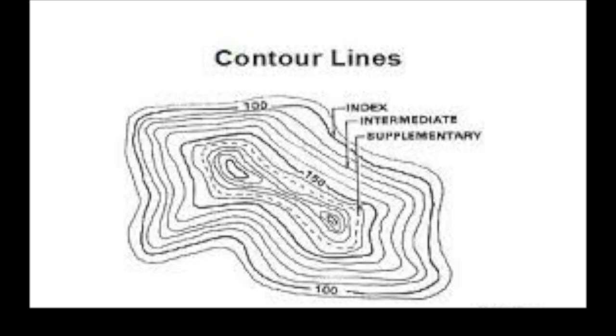Now there are three different kinds of contour lines. You have the index contour line which, as you see in this picture here, has the elevation marked on it. Then you have what is the most common, the intermediate contour lines, which are not labeled. And then you'll have the dotted supplementary lines. Supplementary lines are generally only used when you have kind of a flat elevation.